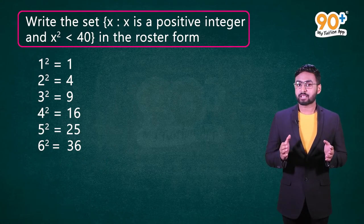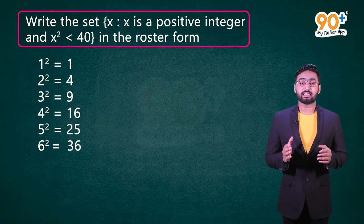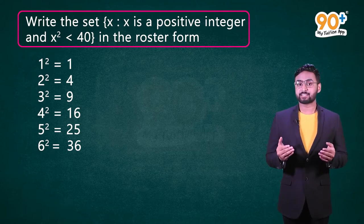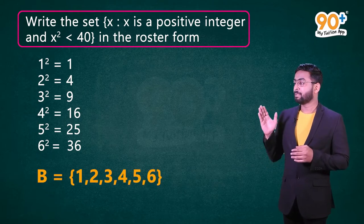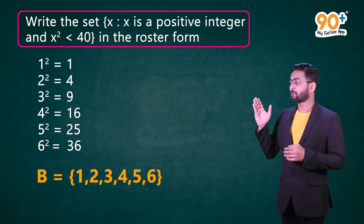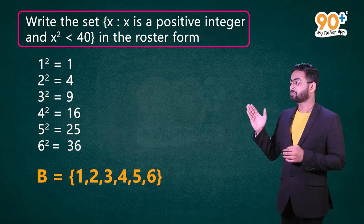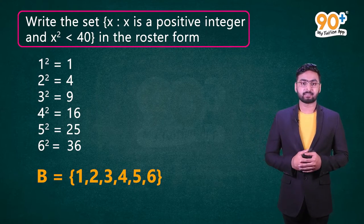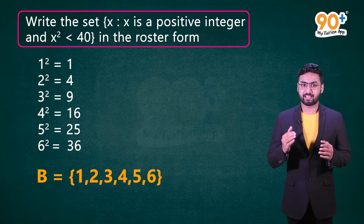Now that we have all the elements, let's write our set in roster form. Let's denote it with B. So B = {1, 2, 3, 4, 5, 6}. This is the required answer. Now let's move on to Example 3.